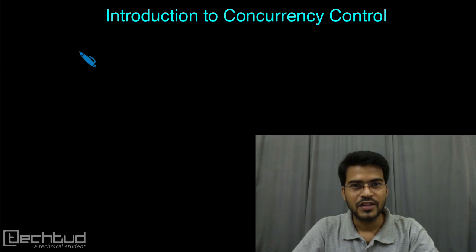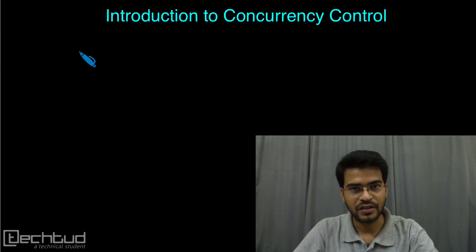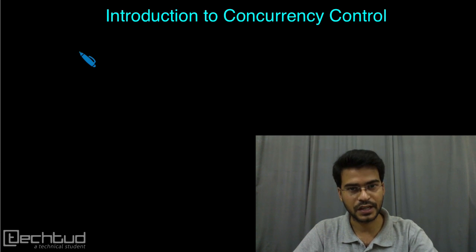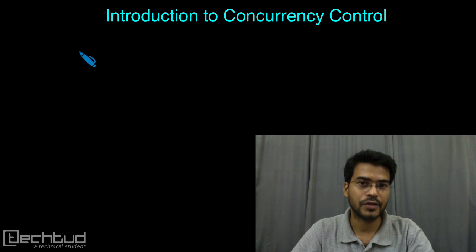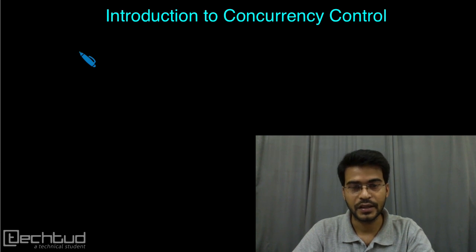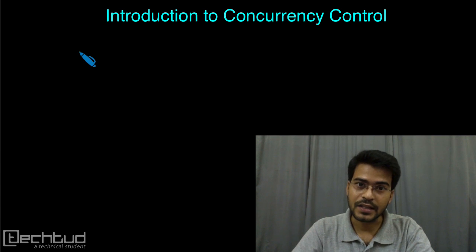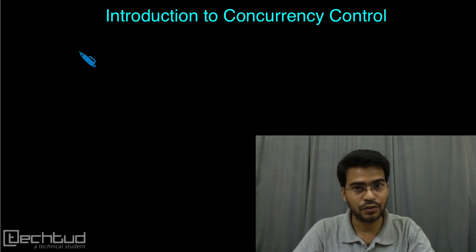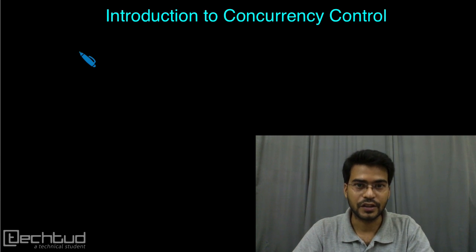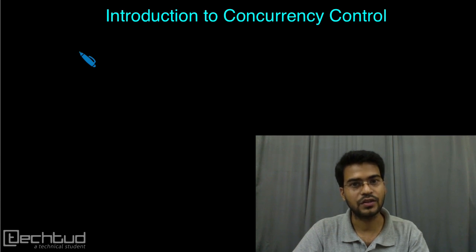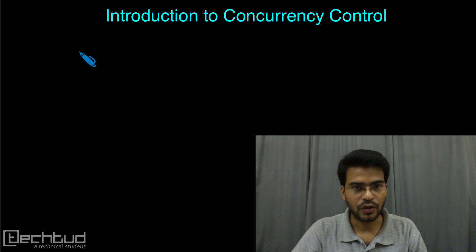Hello everyone, welcome to tech2.com. In this chapter we will learn how to manage transactions so that we can ensure concurrent execution without any problem and without any inconsistent database state. So far we have learned that in a multi-user system we have multiple transactions going on in parallel, and when multiple transactions go on in parallel they will try to access the same data item. So we have to ensure that these problems should not occur during execution of the schedule, and we have already studied how we ensure serializability.